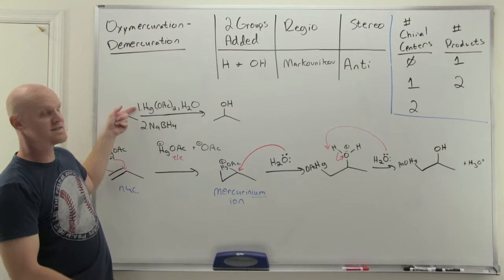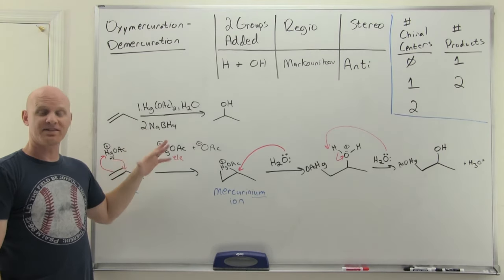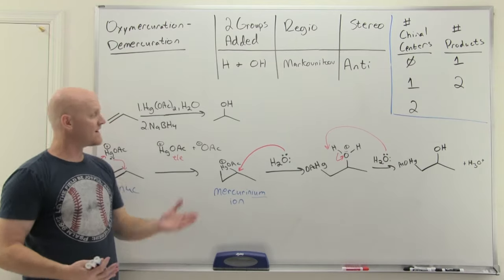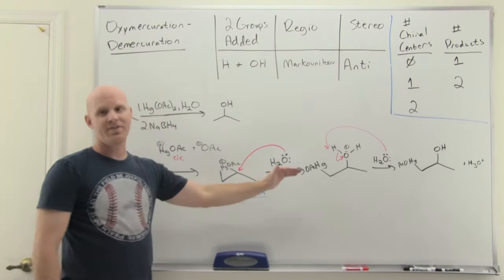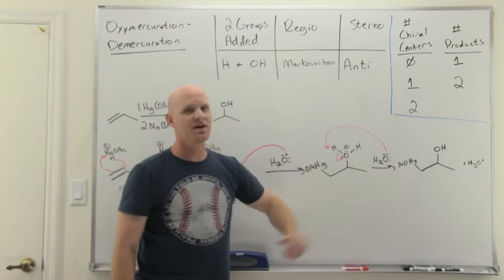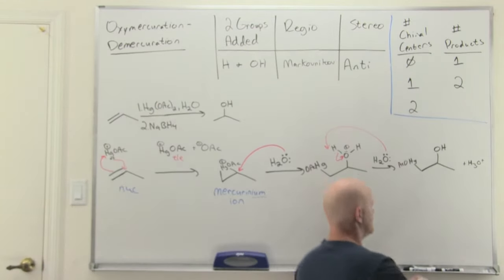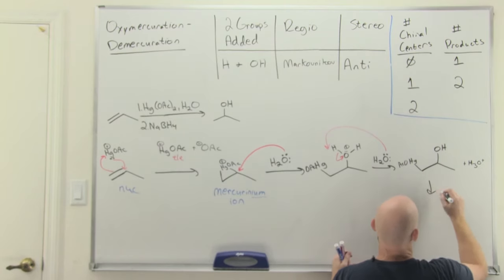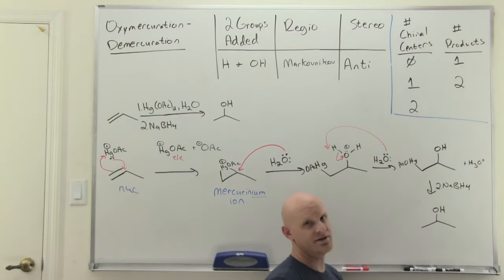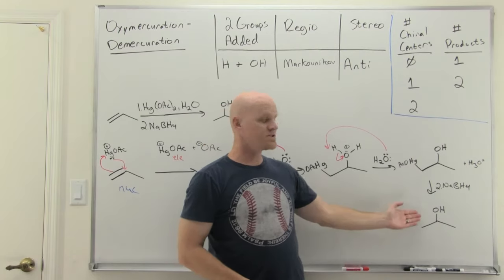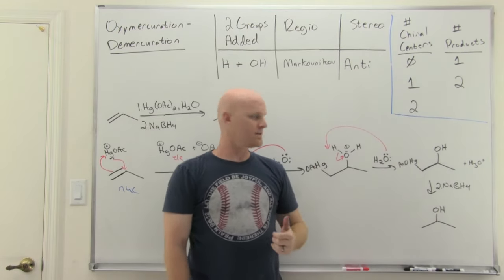The mechanism for step one of oxymercuration has three arrow-pushing steps and you are responsible for knowing it. For step two, sodium borohydride performs demercuration — the exact mechanism has some uncertainty, so you don't need to know the arrow pushing. What you do need to know is that sodium borohydride simply replaces the mercury with a hydrogen. That gives the final product: H on the less-substituted side, OH on the more-substituted side. No chiral centers were formed, so we get one achiral product.